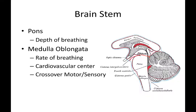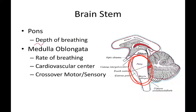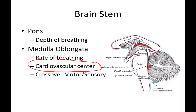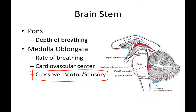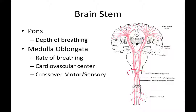The brainstem consists of the pons and the medulla oblongata. Both regions are involved in breathing: the medulla oblongata controls the rate of breathing, while the pons is more involved in the depth of breathing. The medulla oblongata also has additional components involving cardiovascular control and is a location where crossover of fibers — both motor (efferent) and sensory (afferent) — takes place.